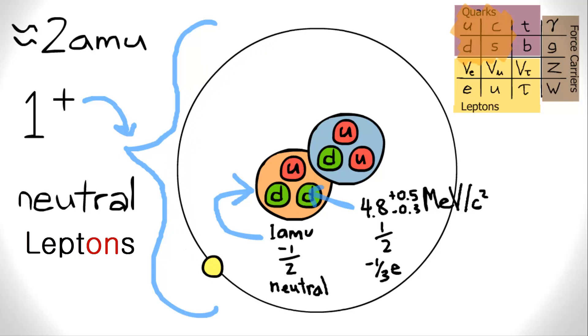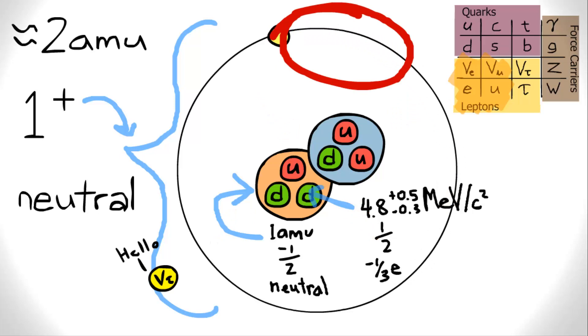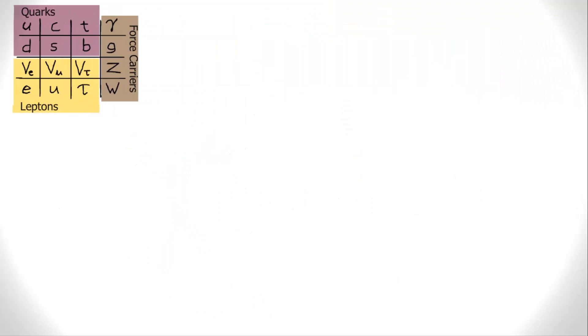Leptons are the fundamentals of subatomic particles which don't take place in the strong interactions, a type of interactions that hold quarks and subatomic particles together. For example, neutrinos and electrons are leptons. Leptons have mass, spin, and charge, just like their quark counterparts.